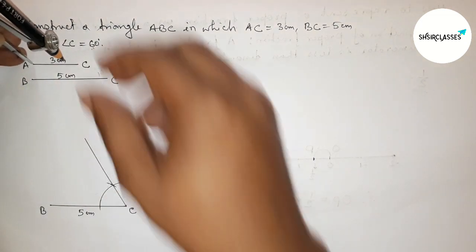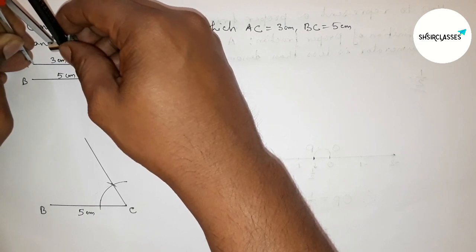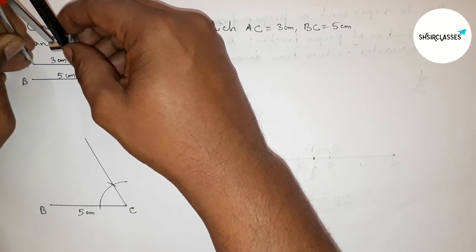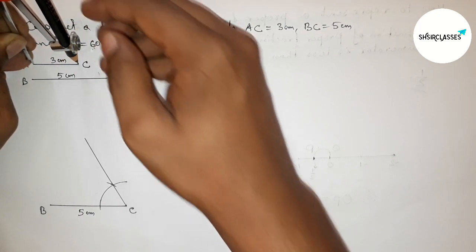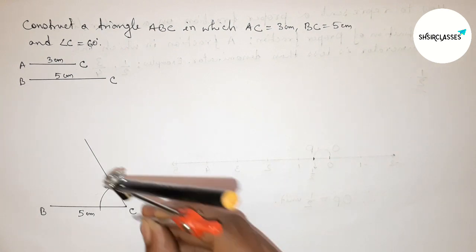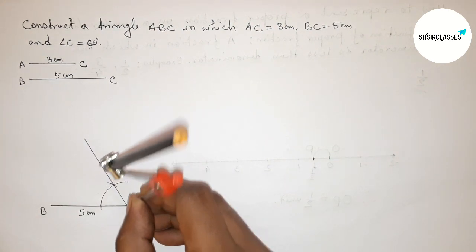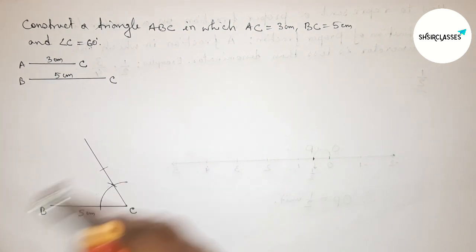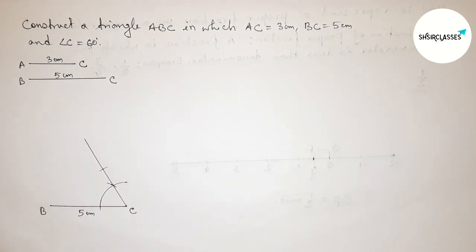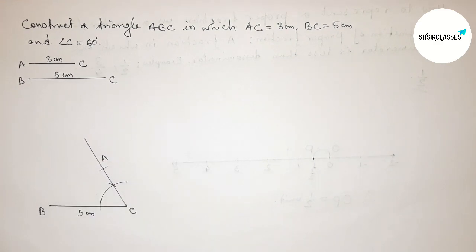Now taking the length AC equals 3 centimeters with the help of a compass. This is perfect. Putting the compass on point C and marking the arc to get point A.